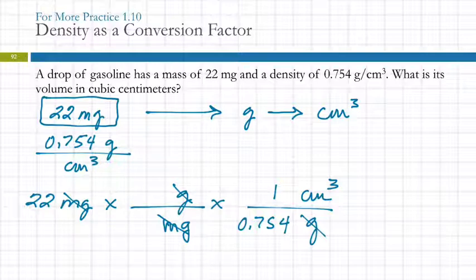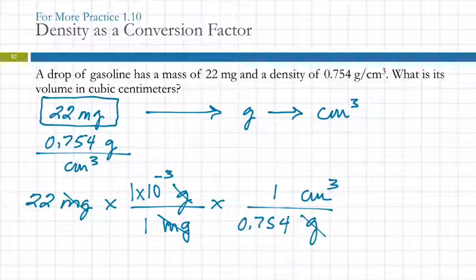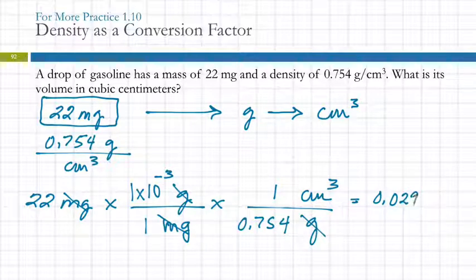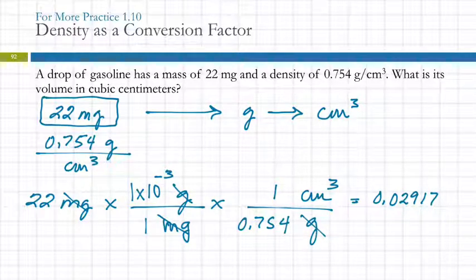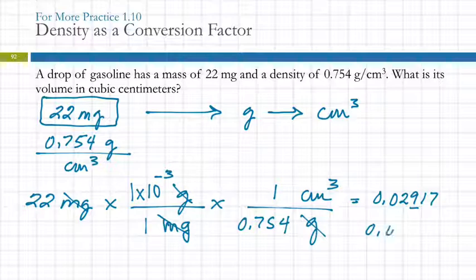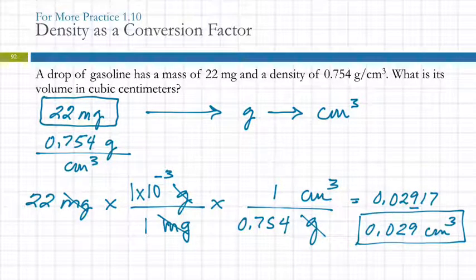For milligrams to grams, we need to know what milli means. We've got milli in the bottom, so we put what it means on top: milli means ten to the minus three. The calculation is 22 times one times ten to the negative three, divided by 0.754. How many sig figs? 22 milligrams — two sig figs. Sometimes you see a whole number and think it might be exact, but can you count milligrams? No, it's a unit of measurement, so it's not exact — two sig figs. So the answer rounds to 0.029 cubic centimeters. The zeros at the beginning are not significant figures.